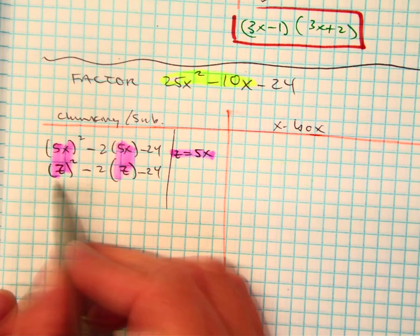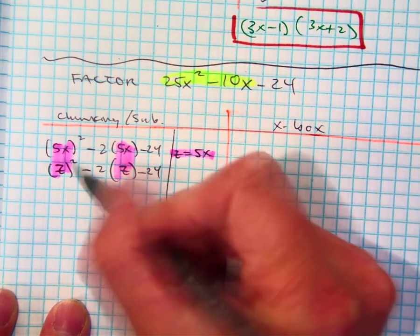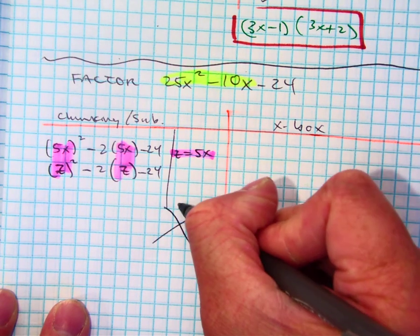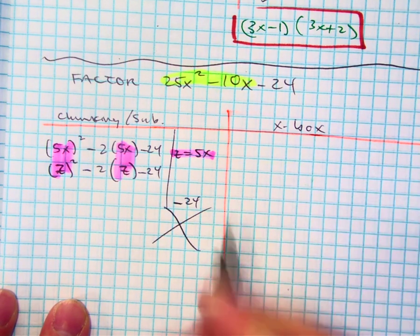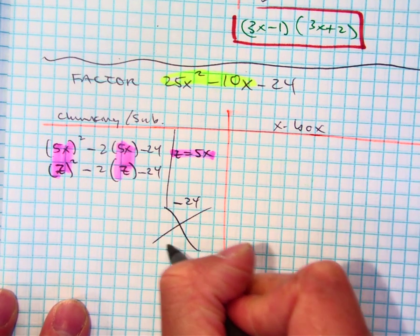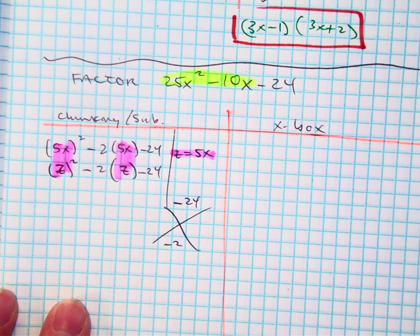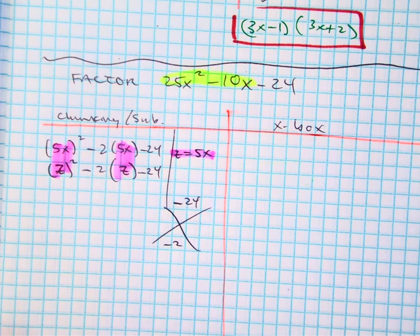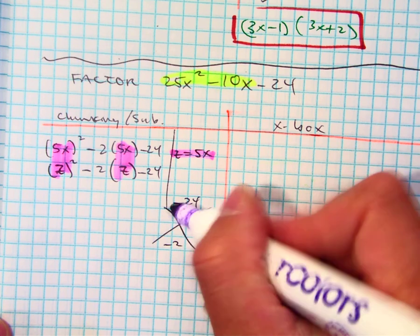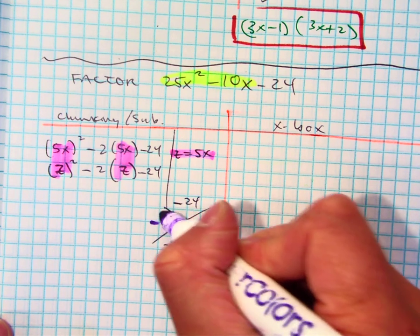And then you can just factor this. A times c is negative 24. What's your b value? Negative 2. What are the two numbers?